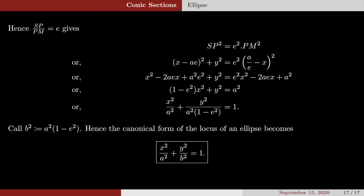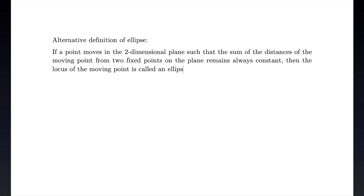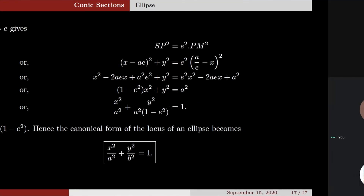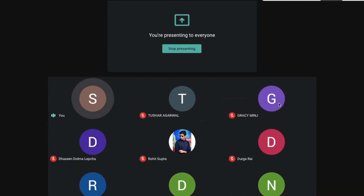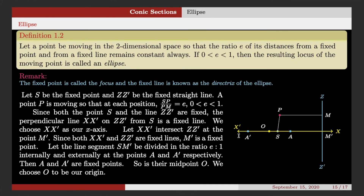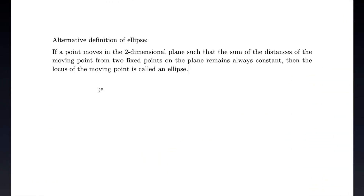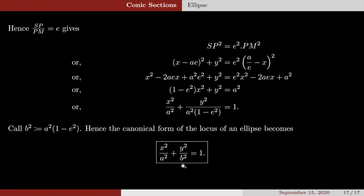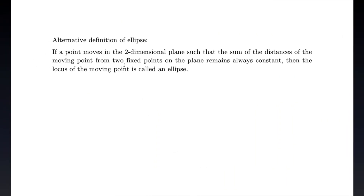This is what the locus of an ellipse looks like: x²/a² + y²/b² = 1. There is an equivalent definition: if a point moves in the two-dimensional plane such that the sum of its distances from two fixed points remains always constant, the locus is called an ellipse. Your homework is to start from this second definition, choose your axes wisely, and derive the same equation x²/a² + y²/b² = 1.